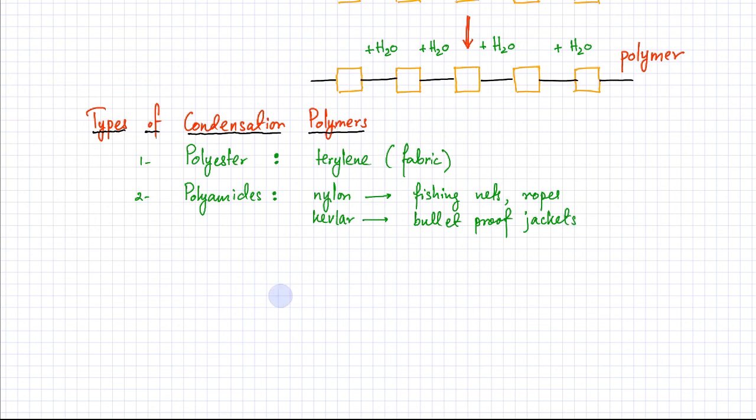One natural polymer or polyamide is protein. Protein is a natural polymer which is made out of amino acids. All our enzymes, cells, and body structures, a lot of them are made out of proteins.